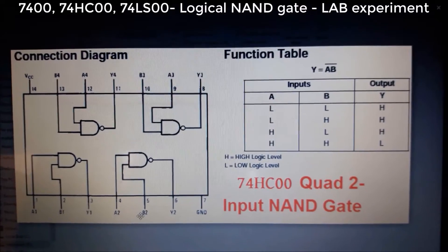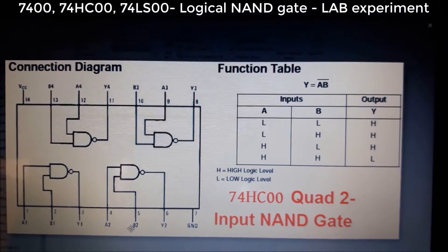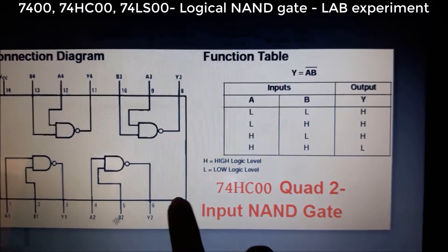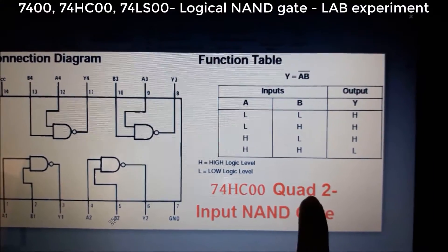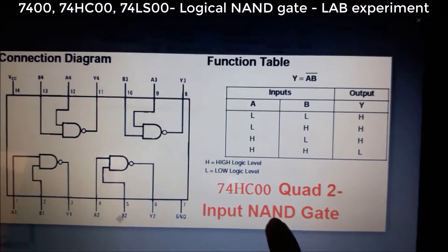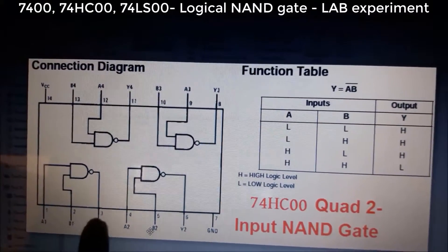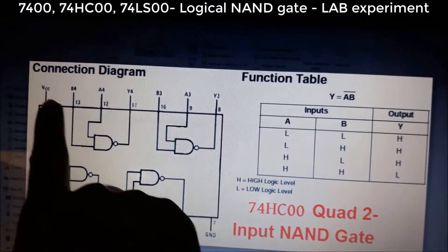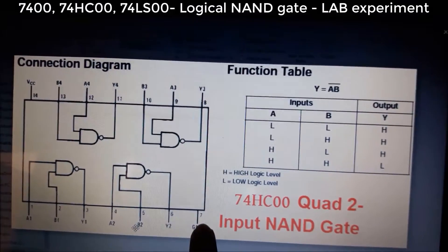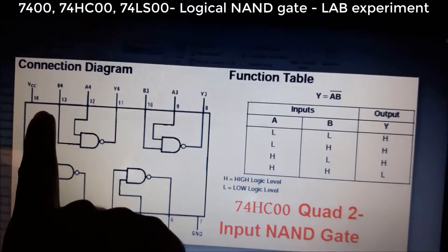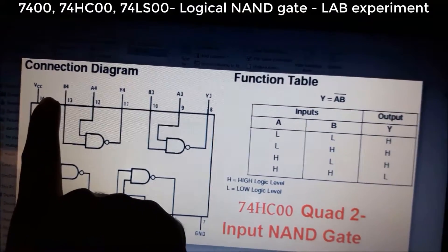Let's see the datasheet diagram of this IC 74HC00 Quad 2-input NAND gate. Here we are seeing pin 1, 2, 3 to pin 14. Pin 7 is GND and pin 14 is for VCC.